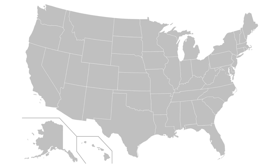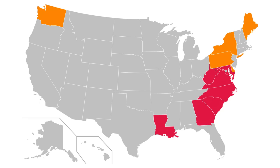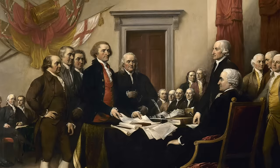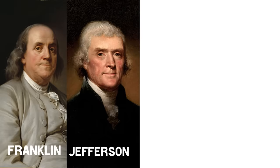Of the 50 states, 11 are named after an individual person. Of those 11, 7 are named in honor of European monarchs: the two Carolinas, the two Virginias, Maryland, Louisiana, and Georgia. Over the years, several attempts were made to name a state after one of the founding fathers — the state of Franklin, Jefferson, Lincoln, and Washington — with only the last one becoming a state name.